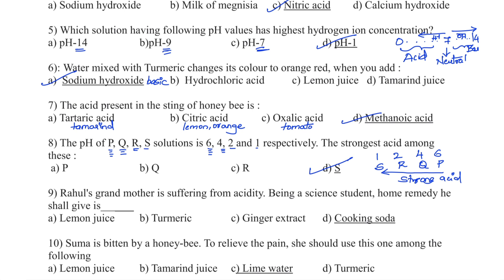Question number 9. Rahul's grandmother is suffering from acidity. The home remedy a science student shall give is: the options include lemon juice, turmeric, ginger extract, and cooking soda. To treat acidity, you use a mild base — a mild base is a cure for acidity. The home remedy for acidity is cooking soda. Therefore, the right answer is Option D.